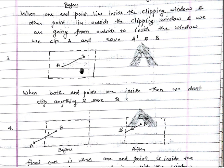Rule three: when both endpoints lie inside the clipping window, obviously the whole edge will also lie inside the clipping window. So we don't clip anything — we save B because it is the endpoint.